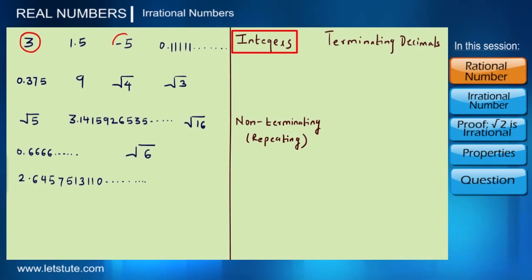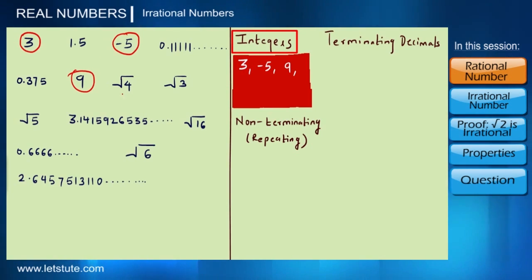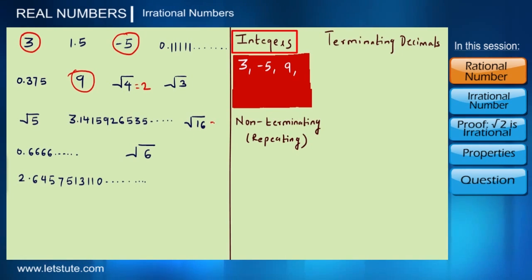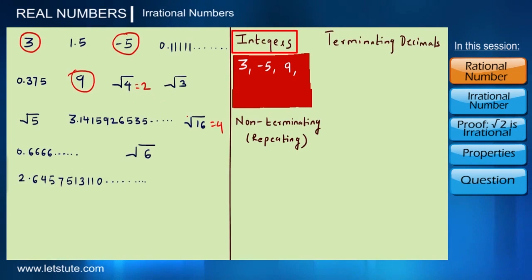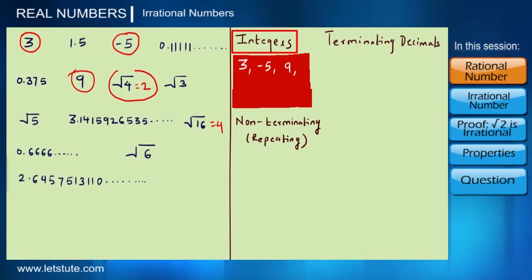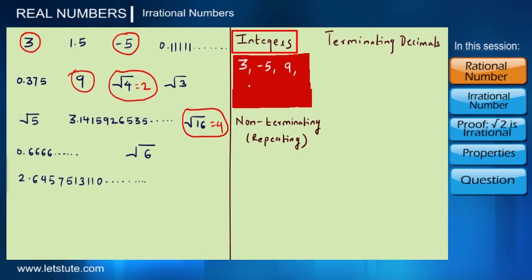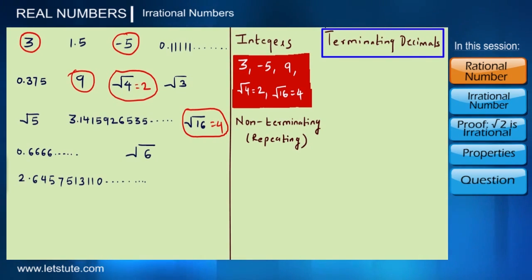Here 3, -5, and 9 are all integers. Also note that root of 4 can be written as 2 and root 16 can be written as 4. The square root values of 4 and 16 are nothing but integers, so root 4 = 2 and root 16 = 4 are also called integers.